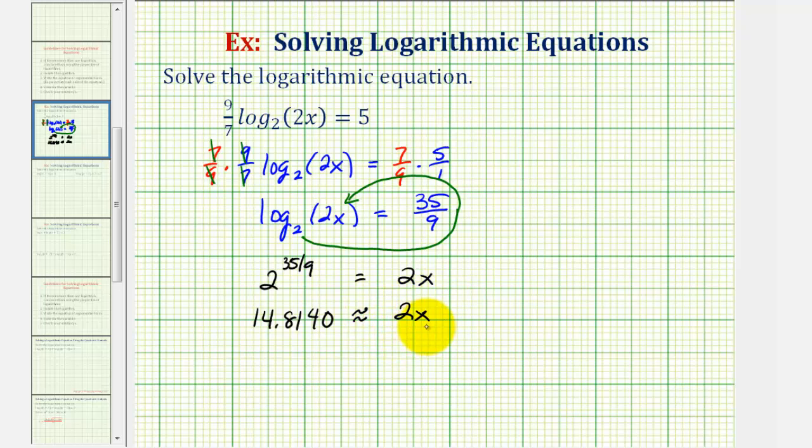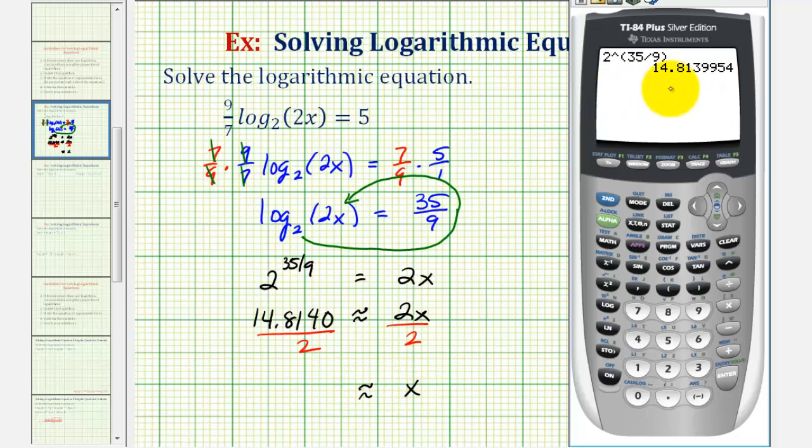And now to solve for x, we divide both sides by two. So we'll take the previous value and divide by two. So x is approximately seven point four zero seven zero.